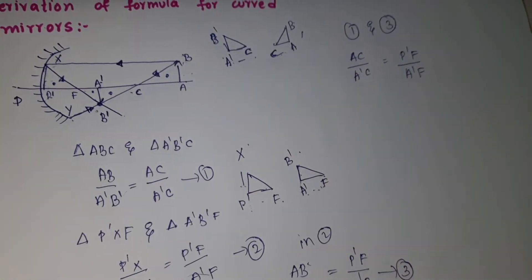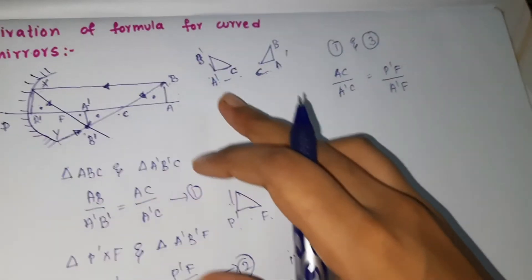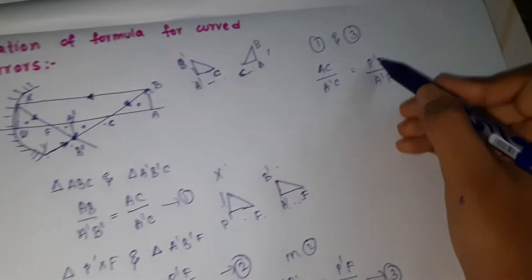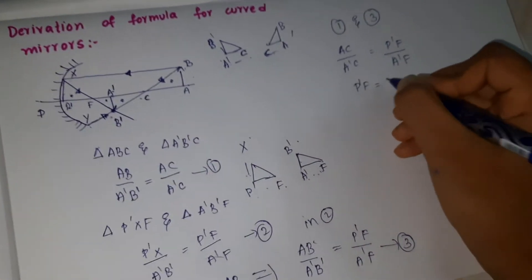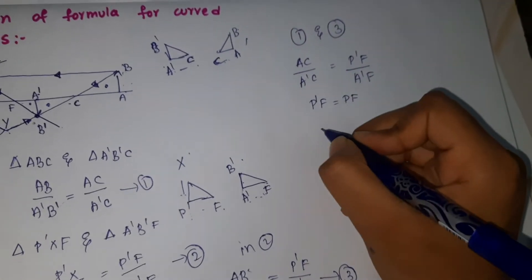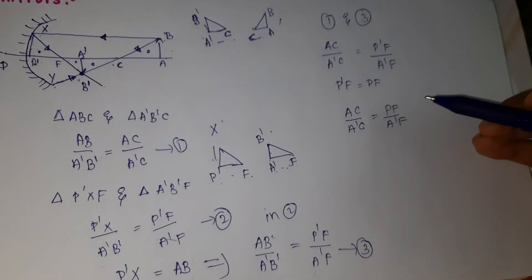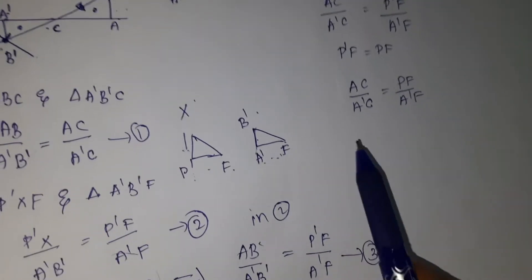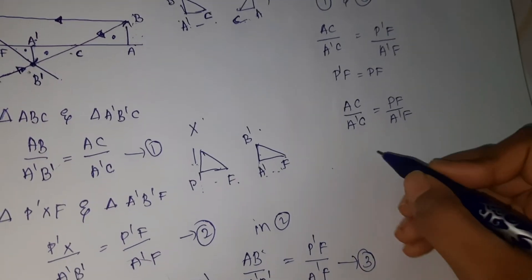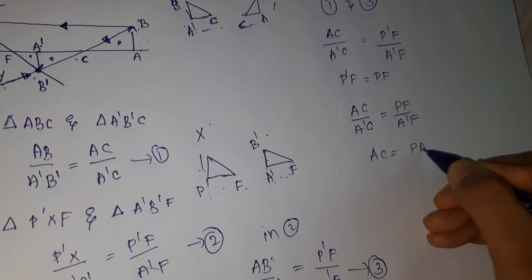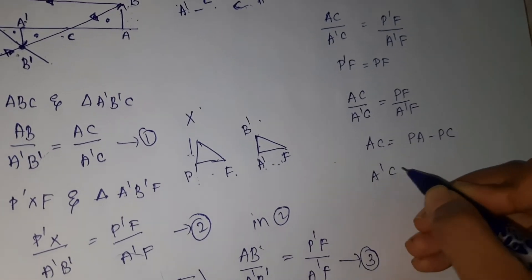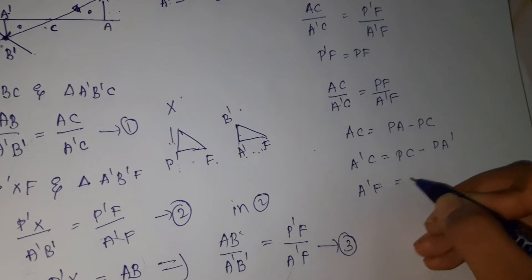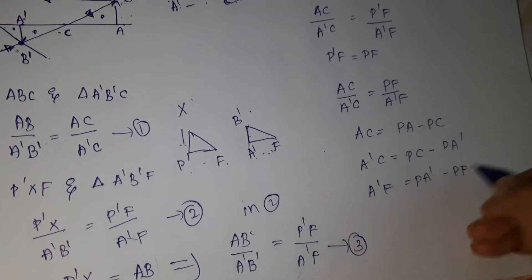Since the rays are traveling very near to the principal axis, we can consider P' as P. So P'F becomes PF. From the figure, AC = PA − PC, A'C = PC − PA', and A'F = PA' − PF.